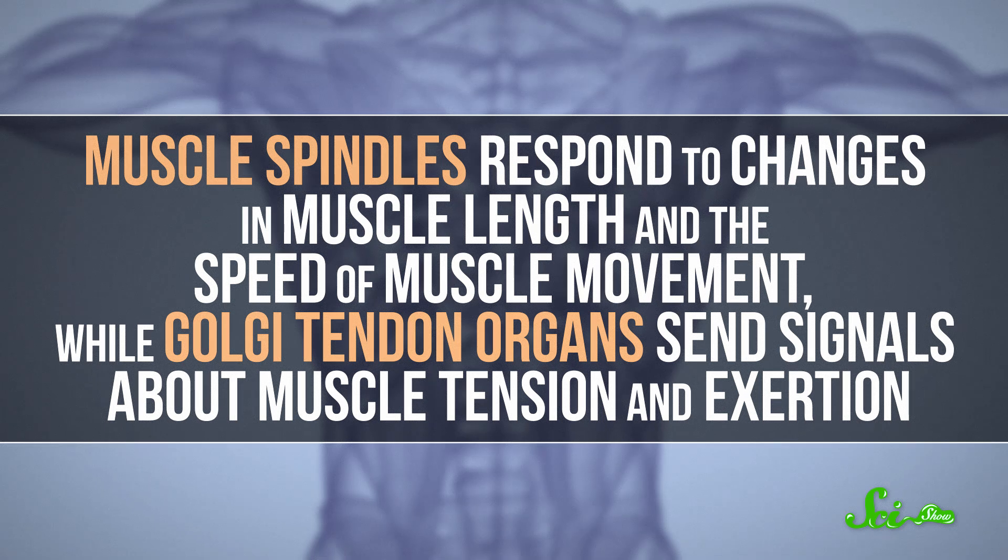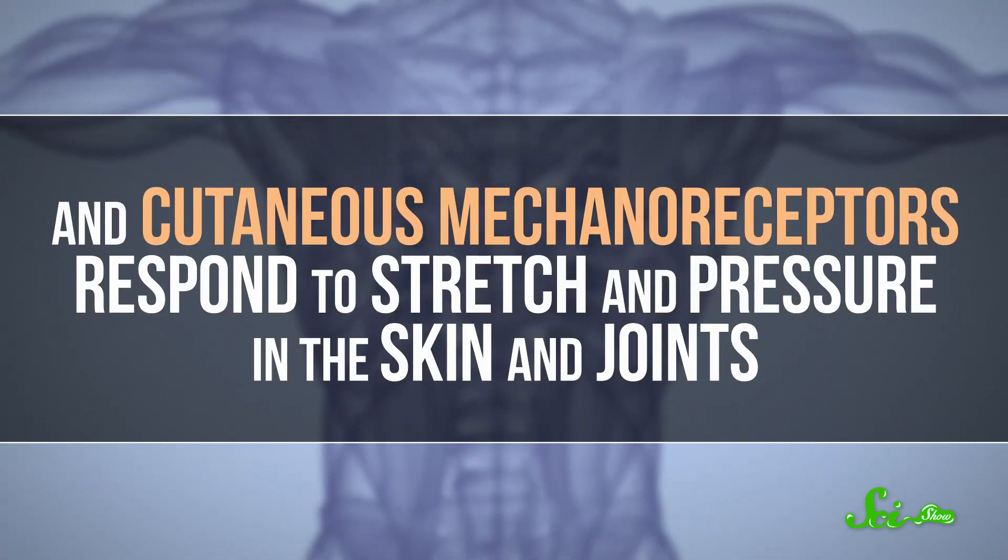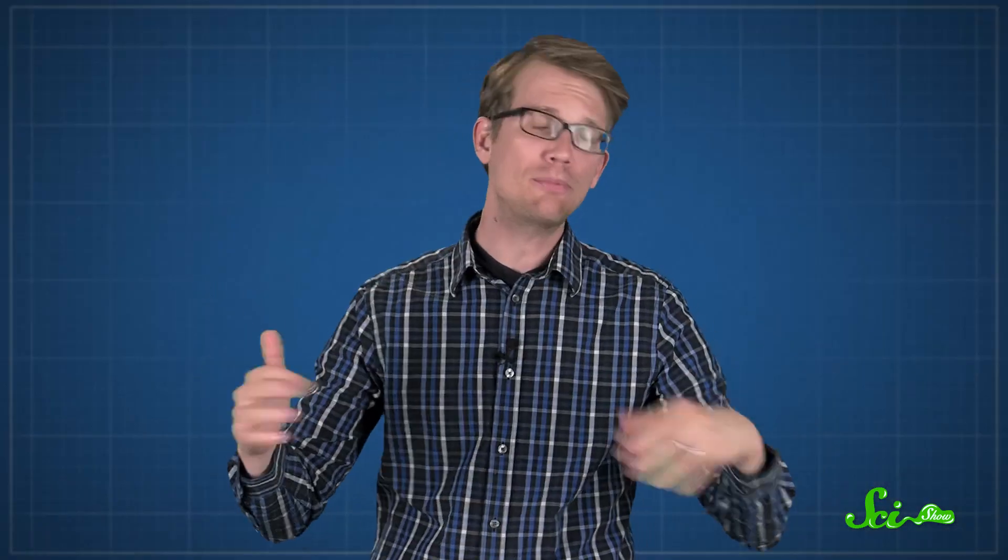For example, muscle spindles respond to changes in muscle length and the speed of muscle movement, while Golgi tendon organs send signals about muscle tension and exertion. And then cutaneous mechanoreceptors respond to stretch and pressure in the skin and joints. All these receptors work together to provide the brain, especially the cerebellum, with information about your movement and the positions of your limbs.